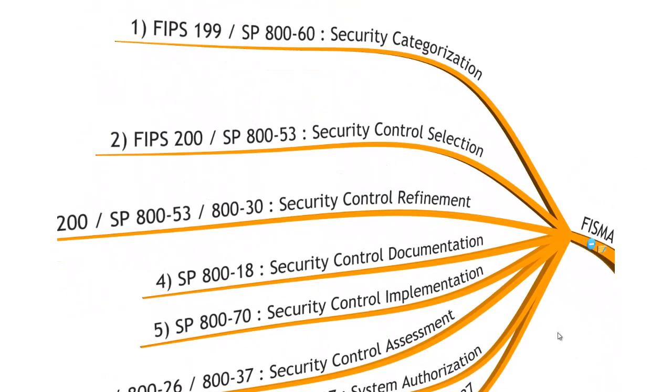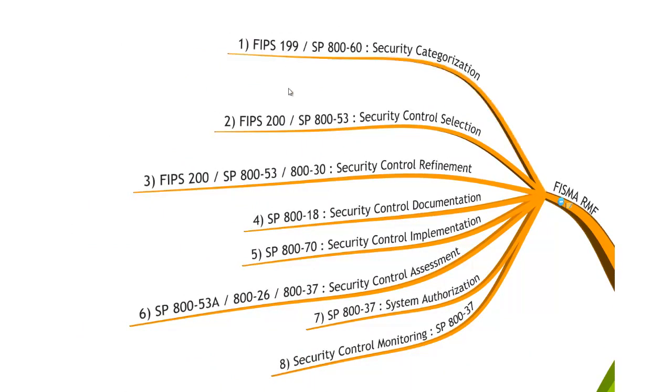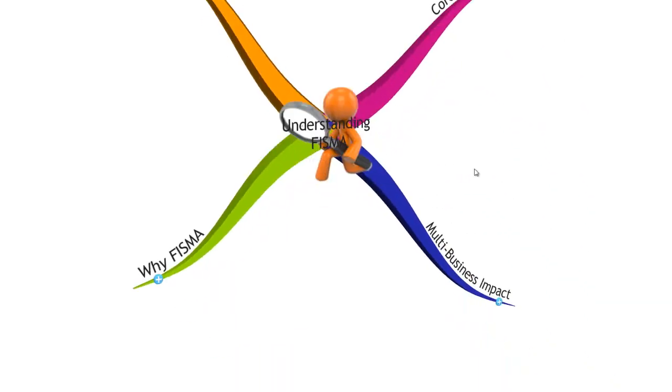Continuous monitoring is a key new component and very important in the FSMA business. Let's look at the risk management framework for a moment. FSMA has what they call a risk management framework. We've talked about some of them: FIPS 199, 800-53, 800-37. These are core components that make up the risk management framework—security categorization, security control selection, assessment, implementation, documentation, continuous monitoring. It's important when you talk to others about FSMA or are trying to learn about FSMA that you understand what the risk management framework is.